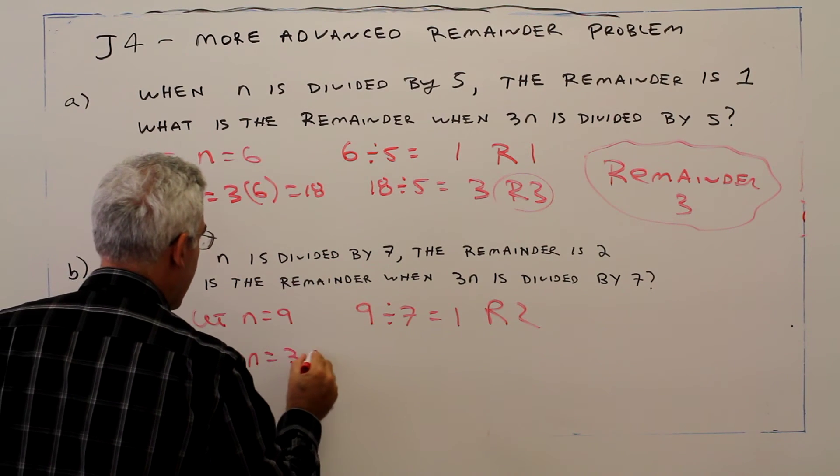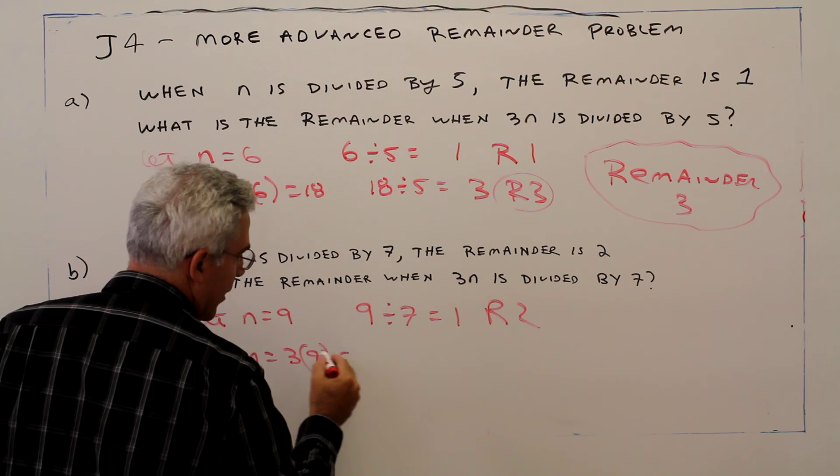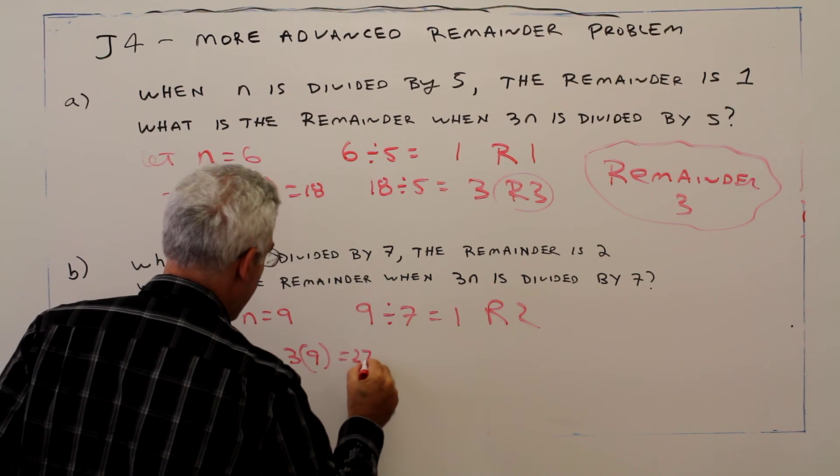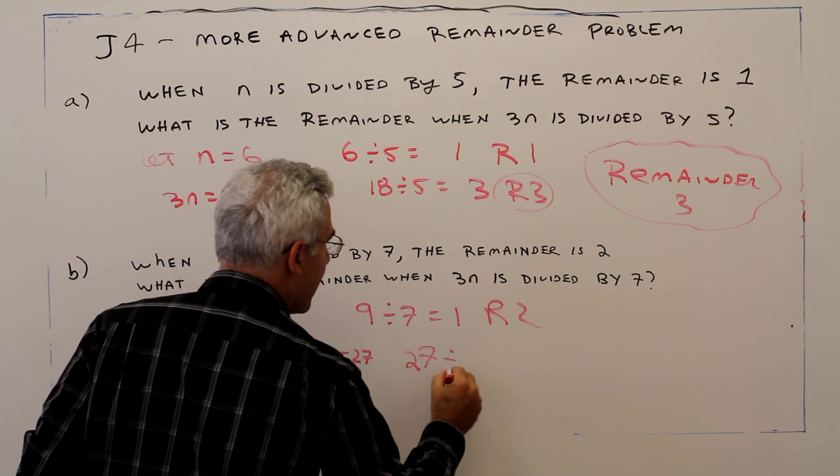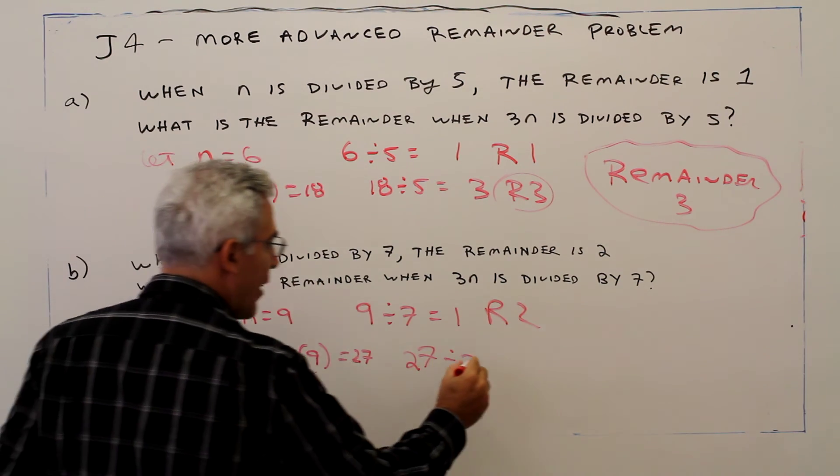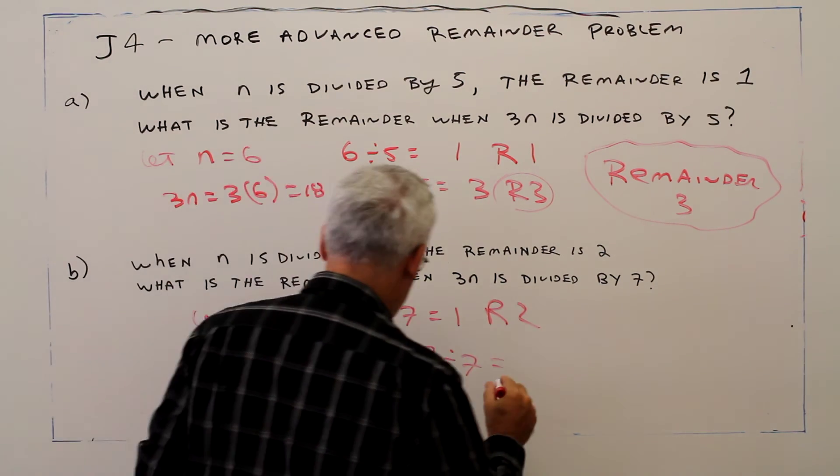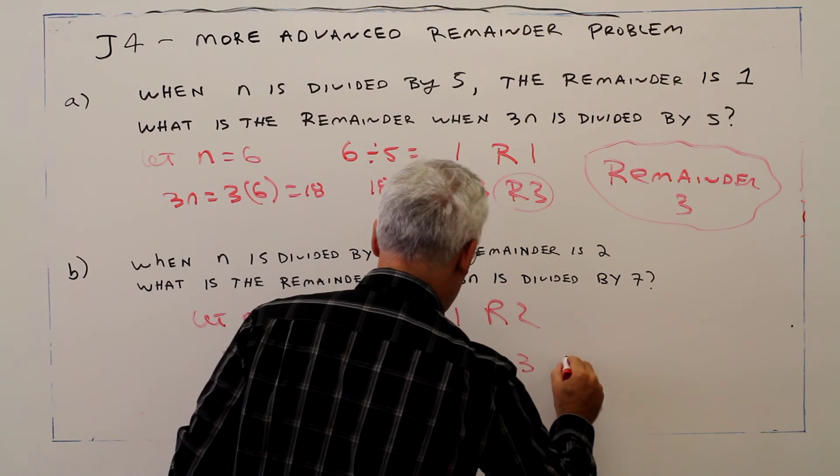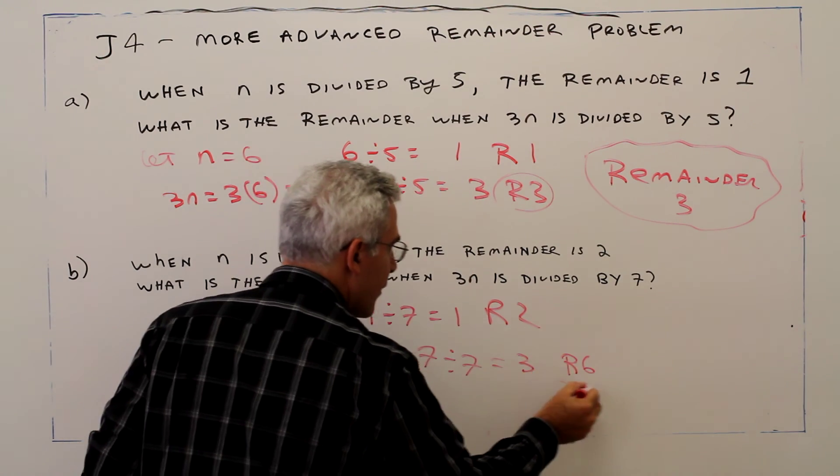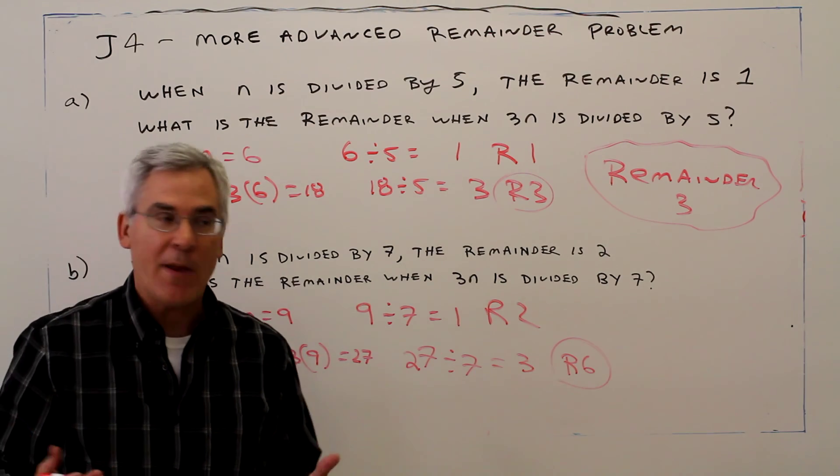3n equals 3 times 9 equals 27. 27 divided by 7 is going to be 3, remainder 6. So the answer is 6.